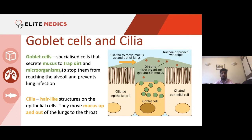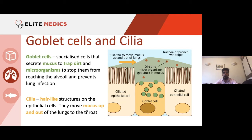This stops pathogens from reaching the alveoli and prevents lung infection. The ciliated cells waft the mucus up and out of the lungs to the throat, where we can re-swallow or spit it out — ensuring it doesn't reach the alveoli where it could cause a lung infection. They work side by side.